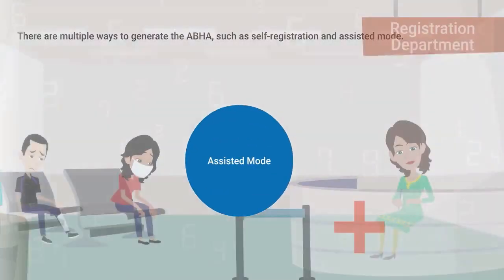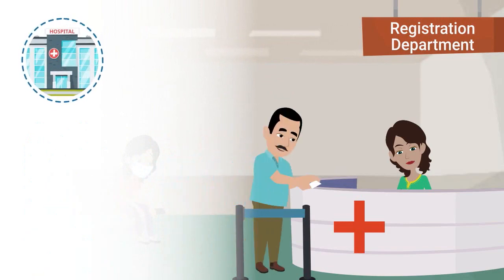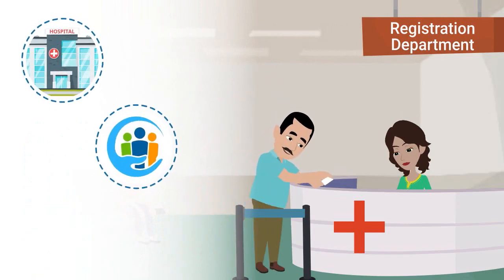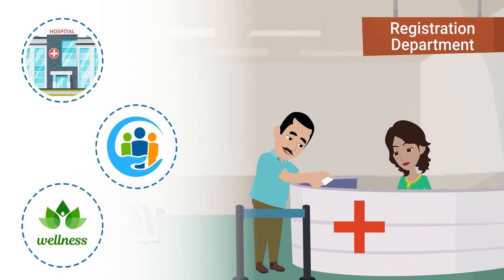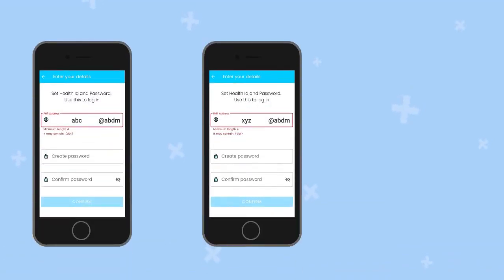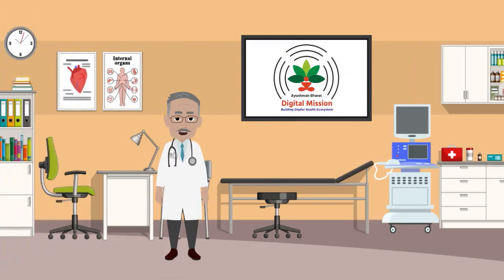In the assisted mode, you can walk into ABDM-enabled facilities like government or private hospitals, community health centers, and health and wellness centers, and request the staff to help create ABHA. It is also possible for one individual to have multiple ABHA addresses, which may be useful in certain situations. In summary, it is easy to create ABHA and start availing the benefits of ABDM.